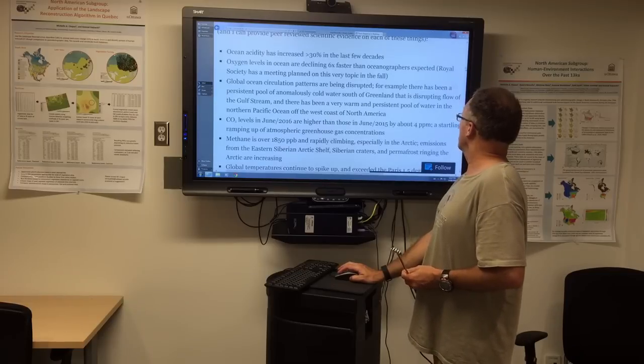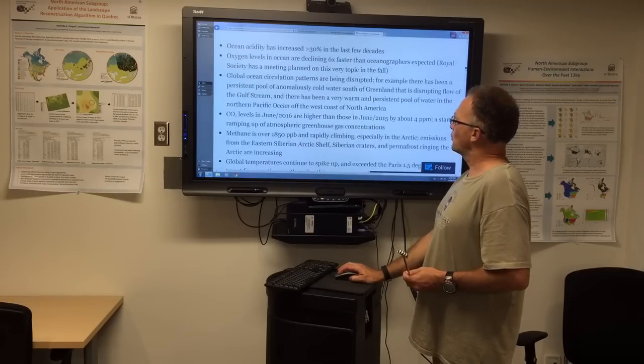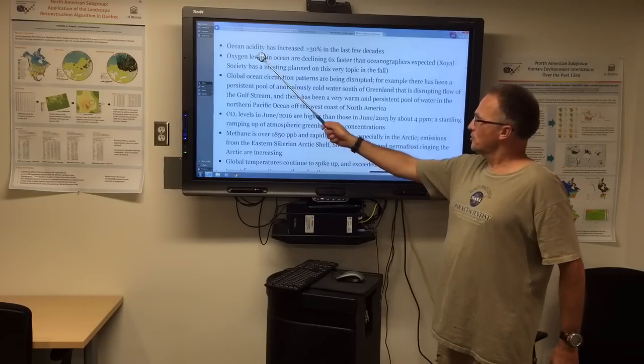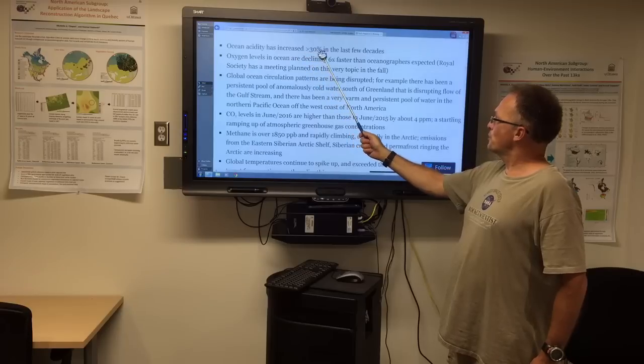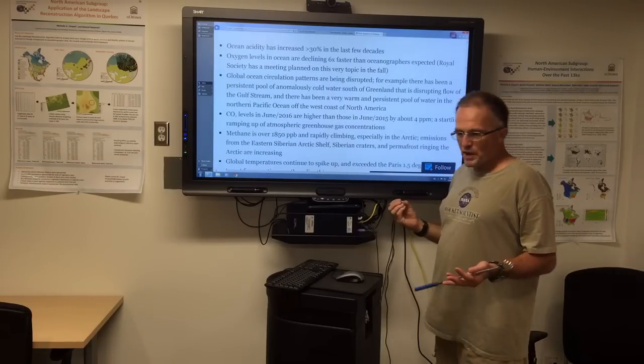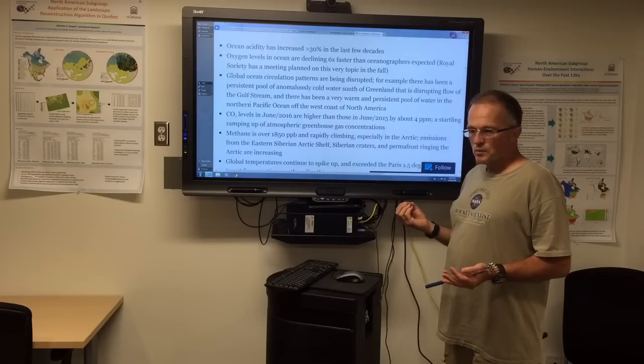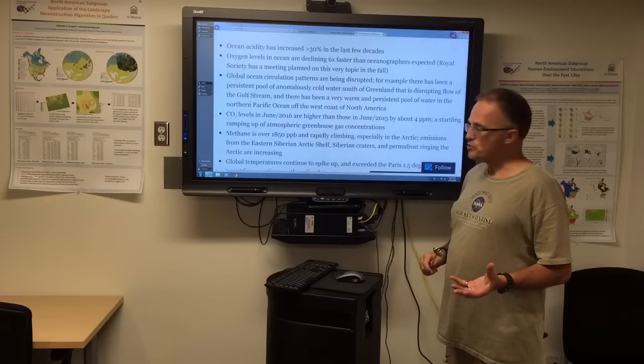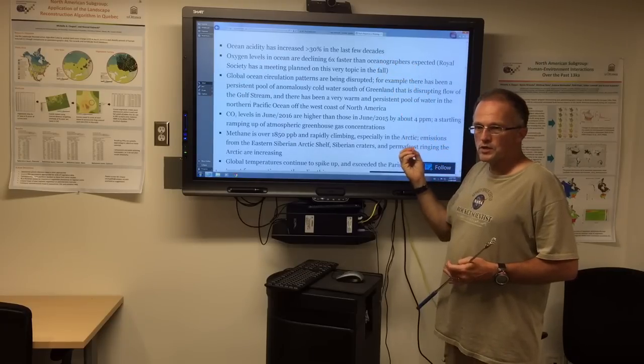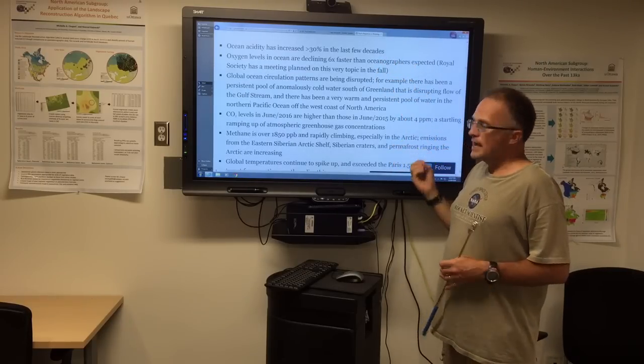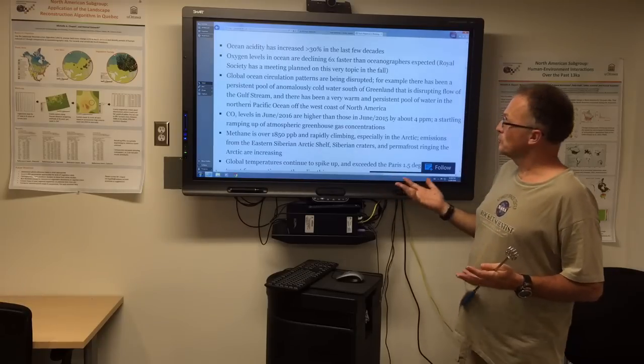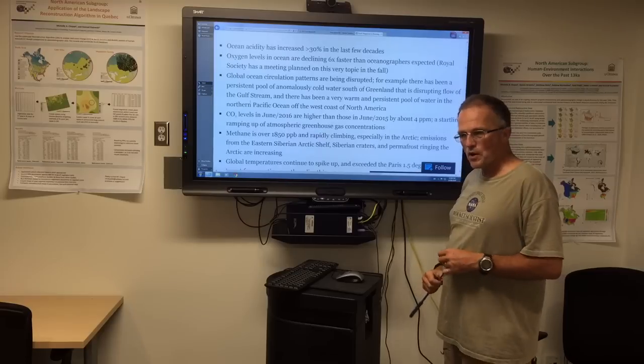So first of all, there's no particular order necessarily to this, but these are some of the key points. The ocean acidity has increased over 30% in the last few decades. So what does this mean? We measure the ocean acidity by the pH, and if the pH is 7, it's neutral. The open ocean, a few decades ago, say 30 years ago, was 8.20 was the pH at the surface. And now when we measure pH at the surface on a global basis, there's different ways of doing it, we get a pH of about 8.1.